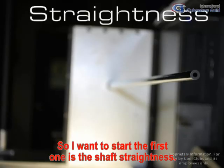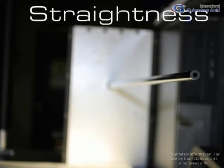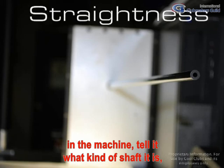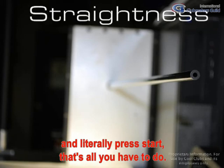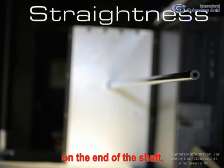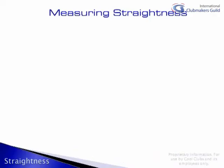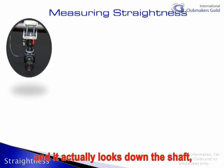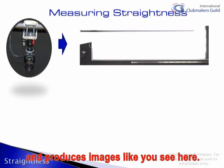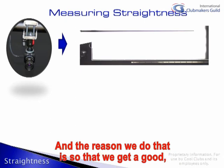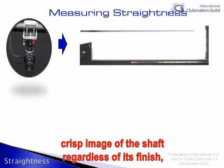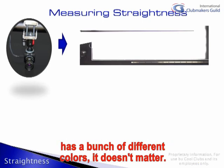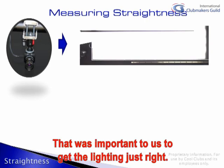So we're going to start with the first test: shaft straightness. Using the software, you insert the club in the machine, tell it what kind of shaft it is, and literally press start — that's all you have to do. There's no chuck on the end of the shaft; we just test it as is, uncut. The machine uses a high-resolution optic system located over top of the machine and looks down the shaft to produce images like you see here. We use backlighting behind the shaft so that we get a good, crisp image regardless of its finish — whether it has a metallic or matte finish — or its color, whether it's white, black, or any number of different colors.